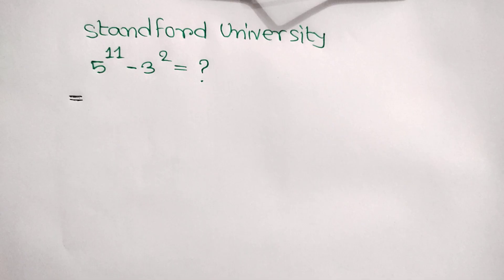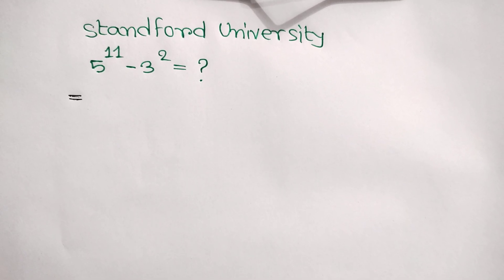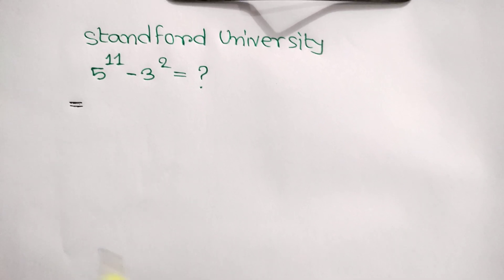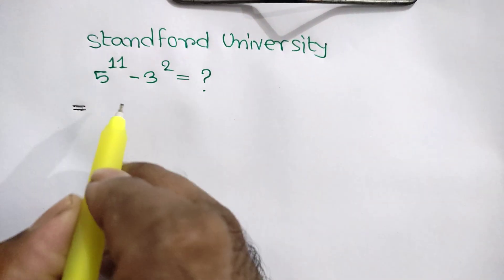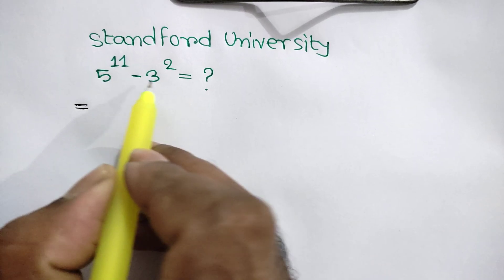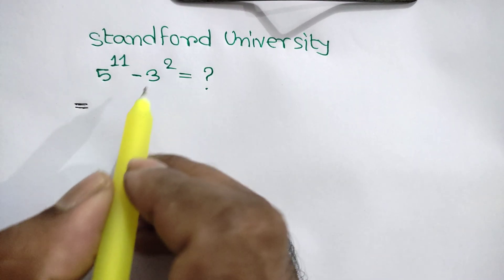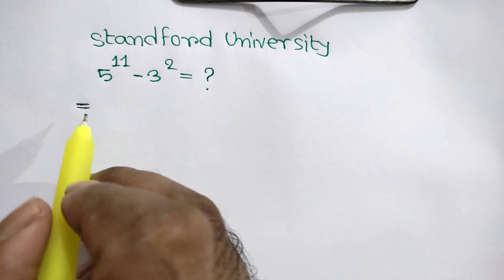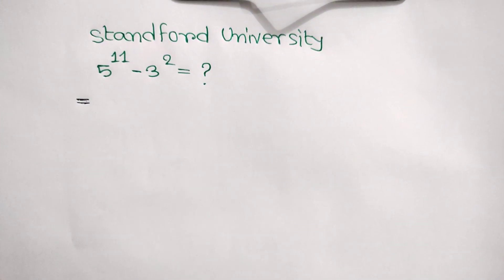Hi everyone, in this video I am going to show how to simplify this math olympiad problem where 5 to the power 11 minus 3 squared is equal to what. Calculator not allowed.